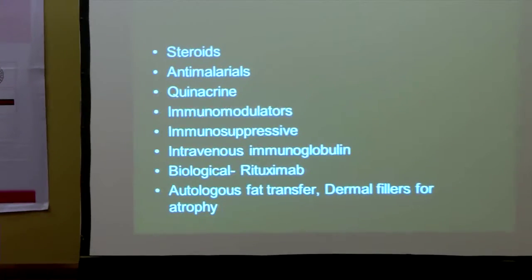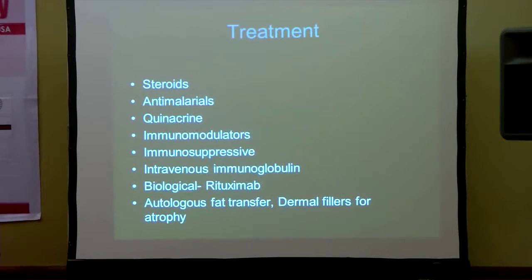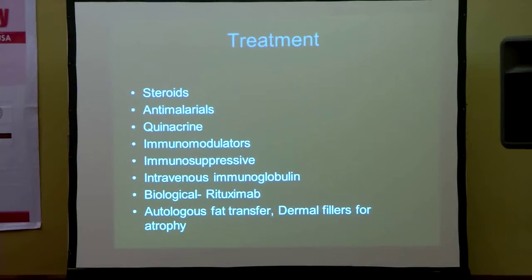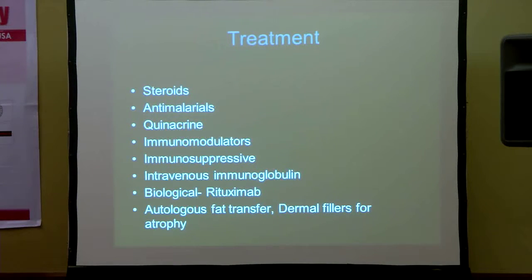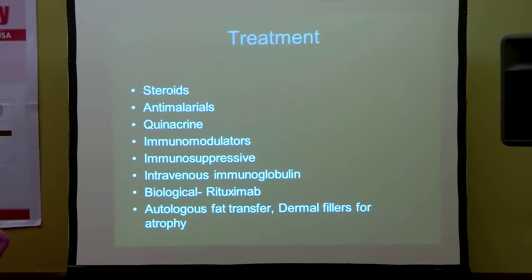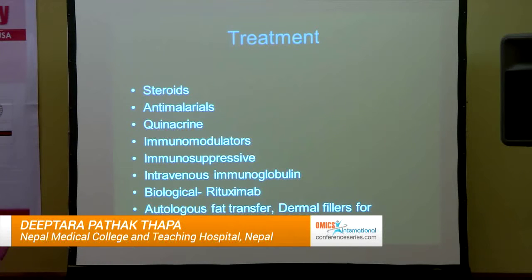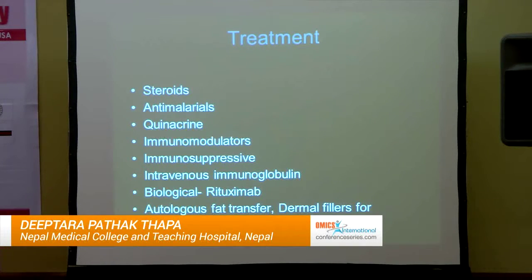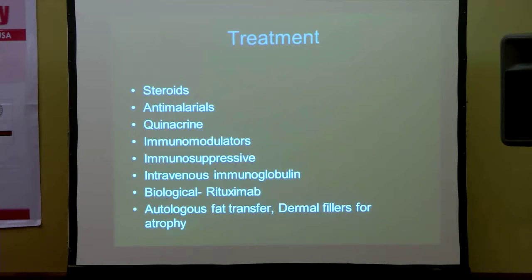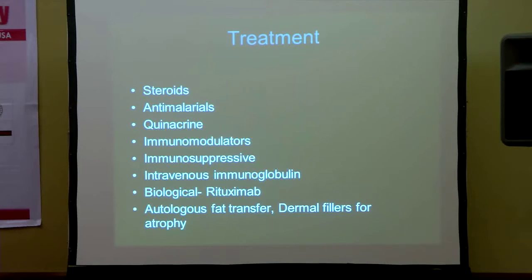Treatment strategies for lupus profundus are challenging due to the low prevalence and the relapsing-remitting nature of the disease. Topical high-potent steroids such as clobetasol propionate 0.05% ointment under occlusion can be used, though there are very few reports of effectiveness when used alone. Oral steroids should be avoided unless the condition is associated with SLE. Antimalarials are the first-line treatment, with hydroxychloroquine used at less than 6.5 mg/kg/day. If there is no improvement, quinacrine can be added at 100 mg/day. Immunomodulators such as thalidomide and dapsone may be used if the patient does not respond to or cannot tolerate antimalarials.